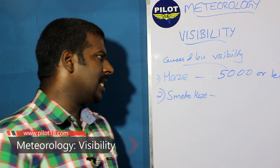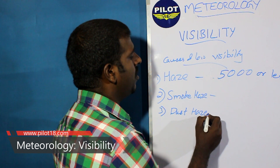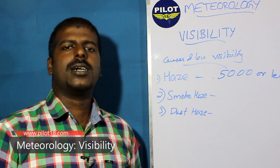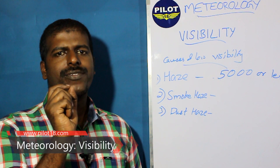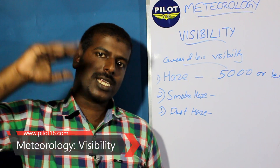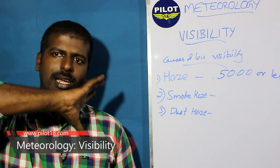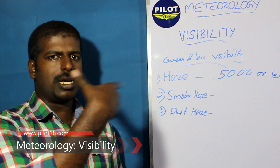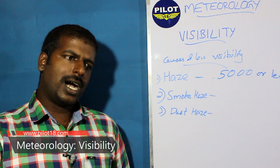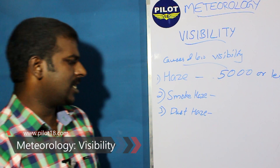Dust haze is also an aviation hazard. It occurs when very small particles of dust are lifted into the air, and can extend more than 68 kilometers horizontally. It causes reduced visibility, and is both a health hazard and an aviation hazard.